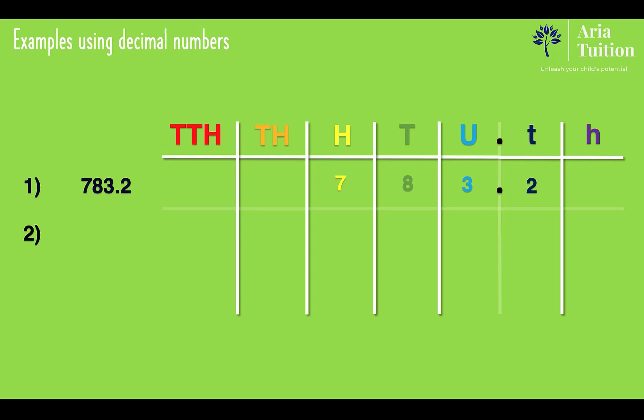Question number two is eleven thousand six hundred and seventy-two point zero one, where there are one ten thousand, one thousand, six hundreds, seven tens, two units, a decimal point, zero tenths, and one hundredth.